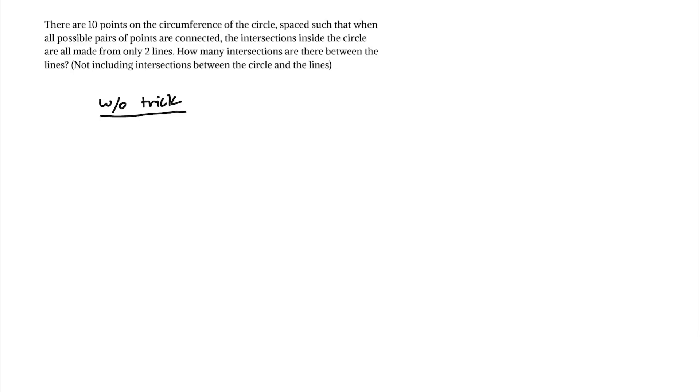I've drawn the circle over here. I'm going to name one, two, three, four, five, six, seven, eight, nine, and ten. These numbers represent the number of points on the circle, and then using those we can form lines and count the number of intersections.